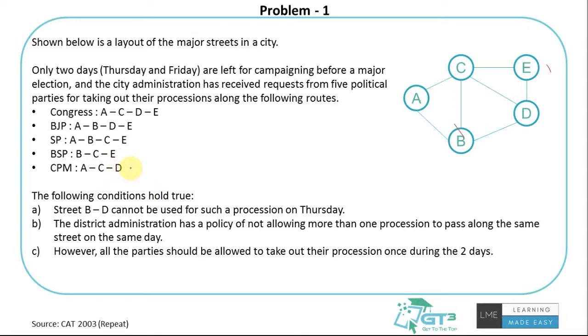These are the requirements and goals of various stakeholders. The goal is that all parties should be allowed to take out their procession once during the two days. The conditions are: Street BD cannot be used for such procession on Thursday, so this road is blocked for Thursday. The district administration has a policy of not allowing more than one procession to pass along the same street on the same day.